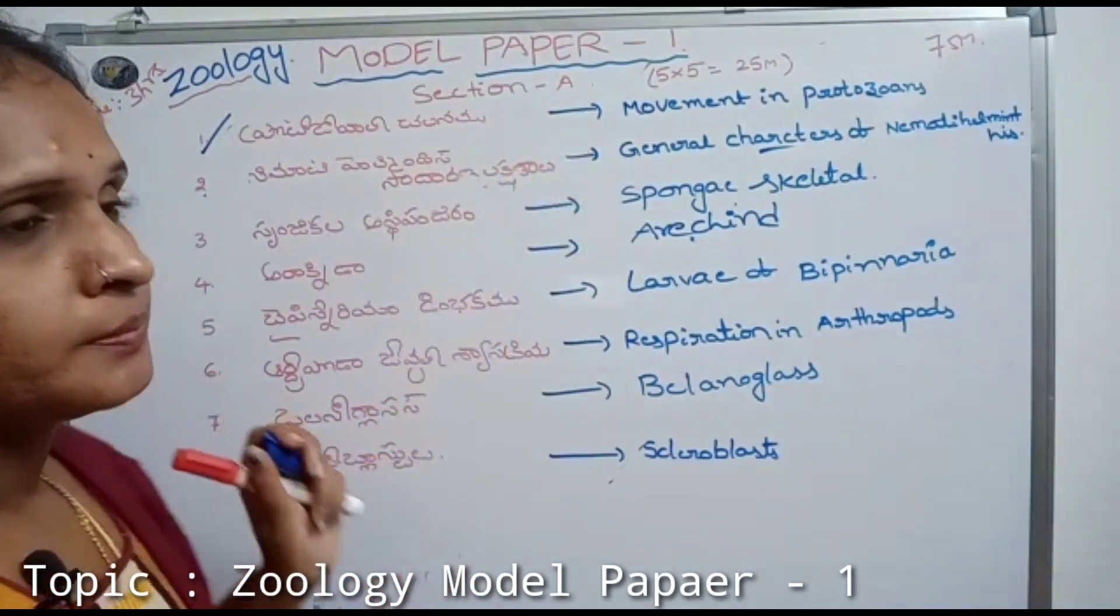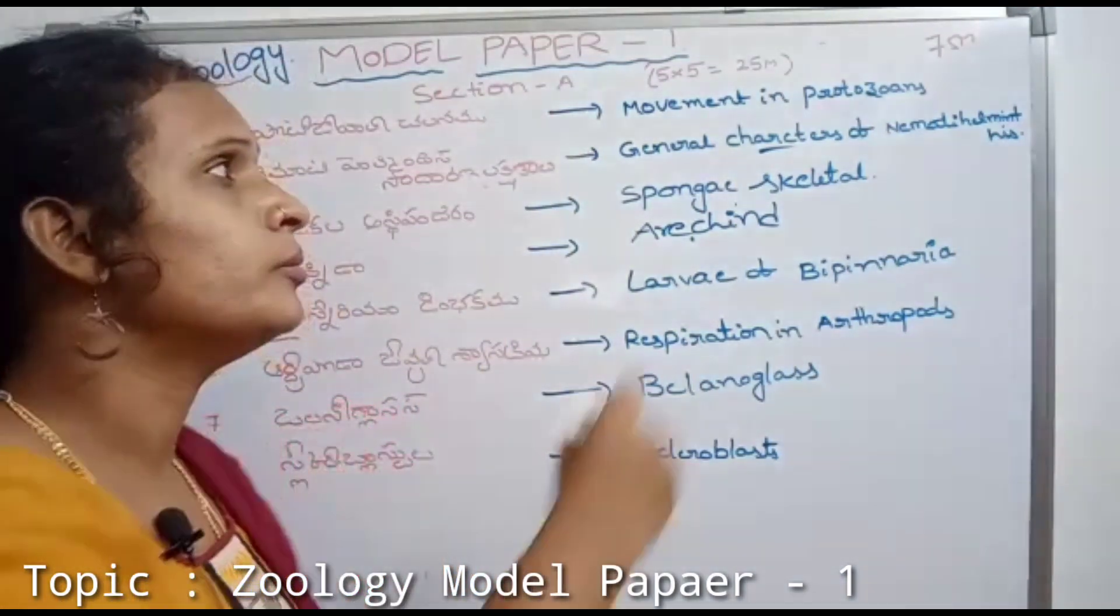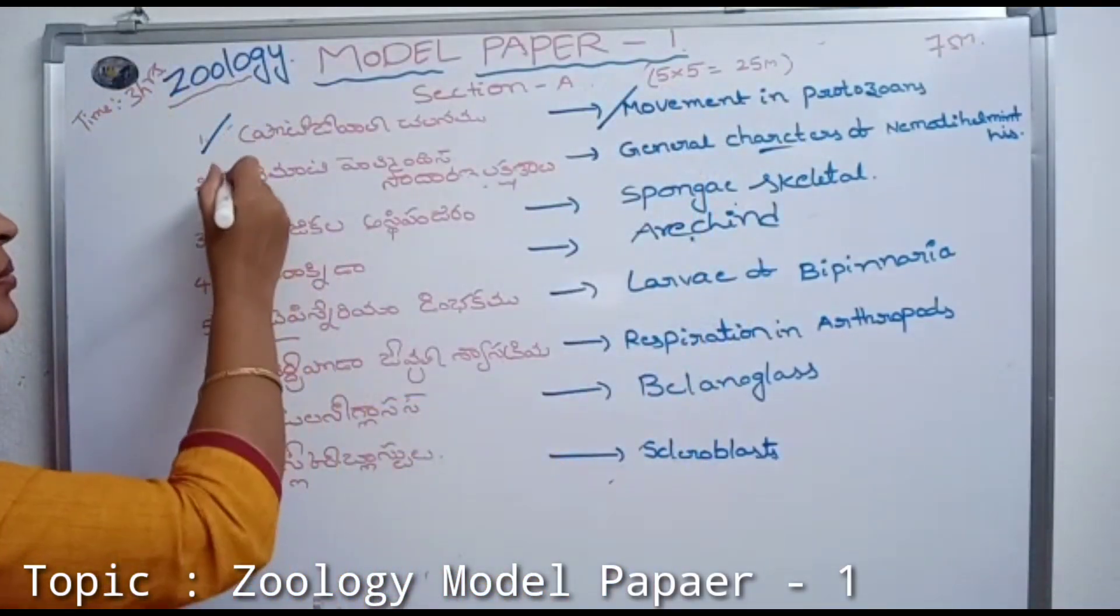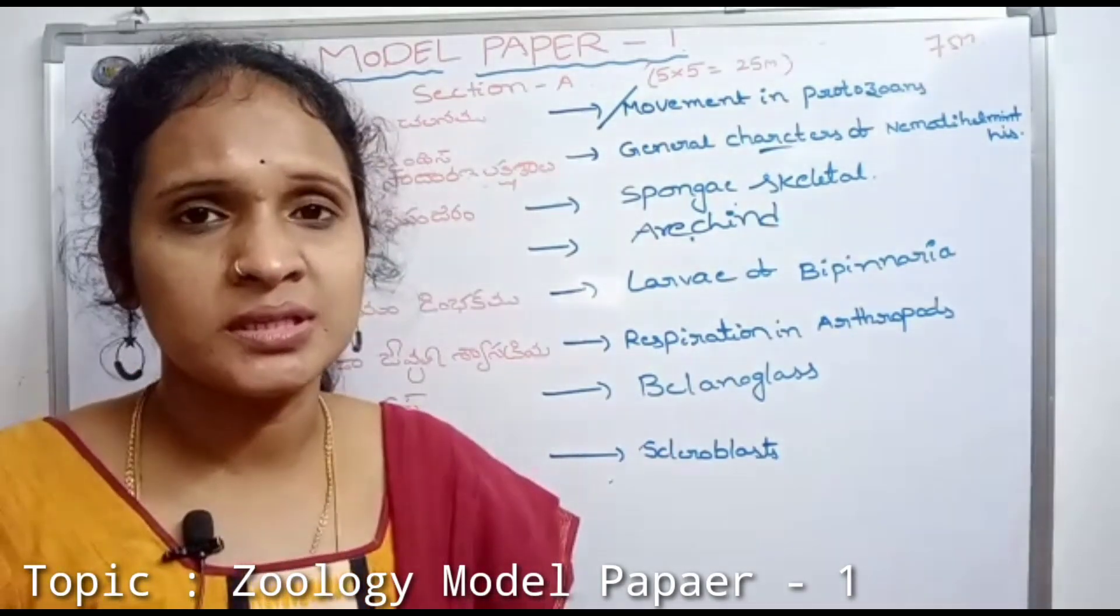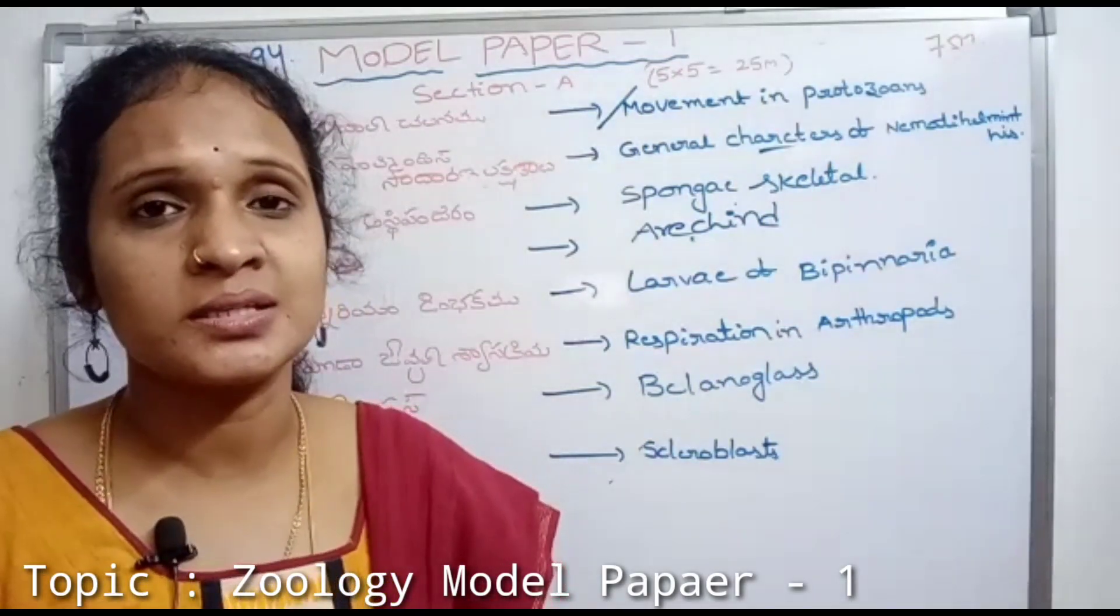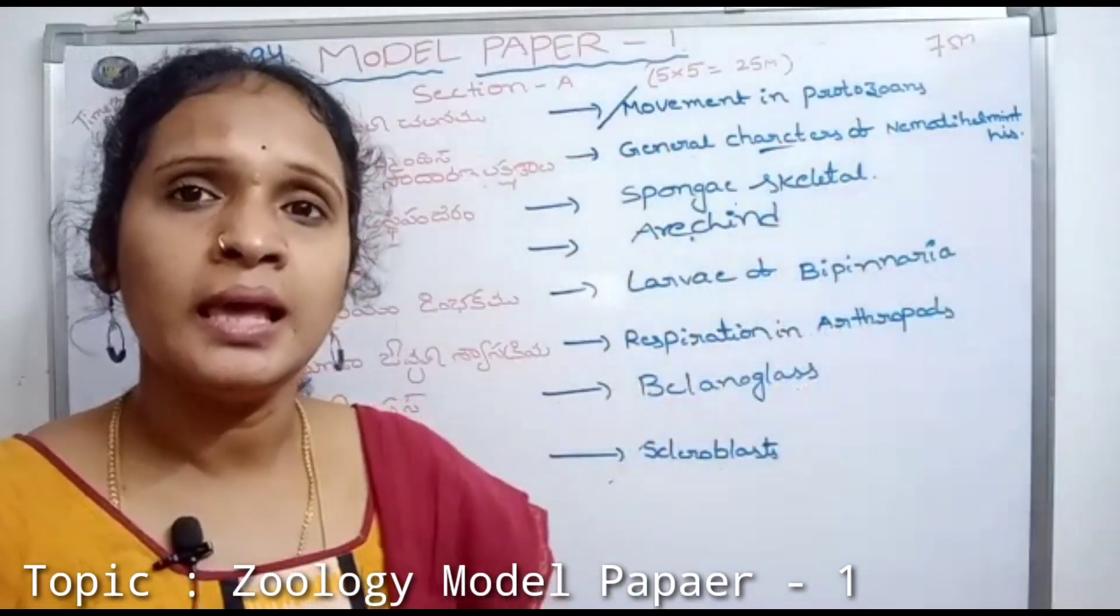The first question is Protozoa, which is very important. Movement in protozoans. Next, Nemathelminthes - the general character of Nemathelminthes.